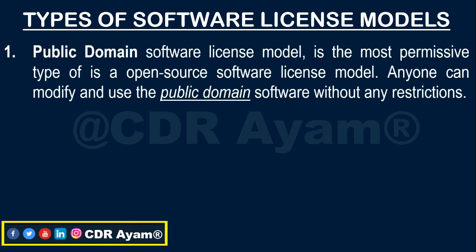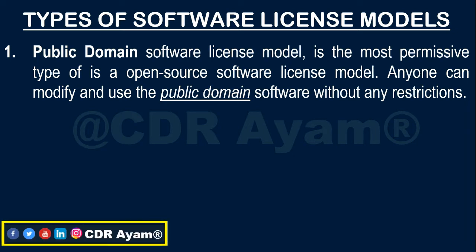One of the 4 open source license models is the public domain license model. The public domain license model is the most permissive type of software license model. When a software is in the public domain, anyone can modify it and use the software without any restriction. But as a software reverse engineer, I advise you to always analyze the software to make sure that it is secured before adding it to your own code base.